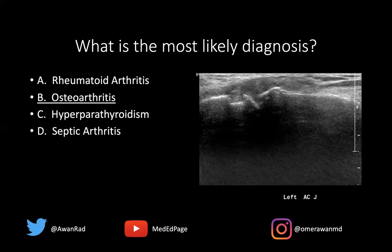We can also see synovial hypertrophy and pannus formation that can occur in rheumatoid arthritis. Hyperparathyroidism can also result in loss of bone, and that would be subchondral, typically along the distal clavicle. So we'd see loss of bone along the distal clavicle — sometimes it can affect the acromion, but more characteristically it'll involve the distal clavicle in the setting of hyperparathyroidism.